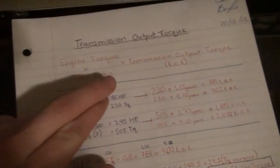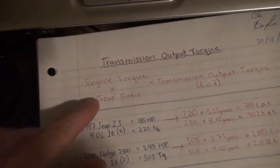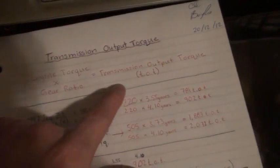Okay, so first thing you need to figure out is transmission output torque. The equation for that is engine torque times gear ratio, that equals transmission output torque.